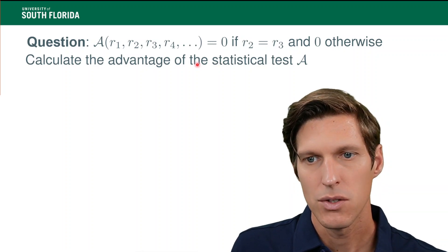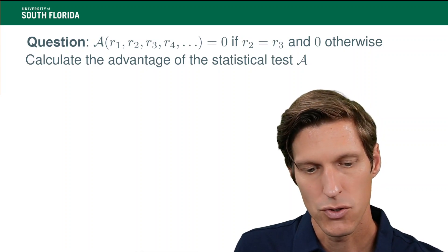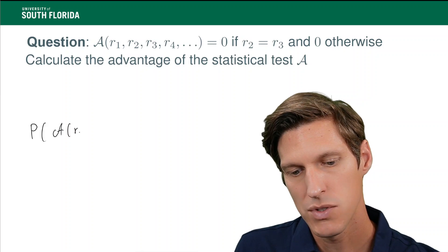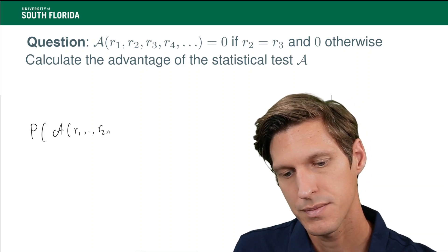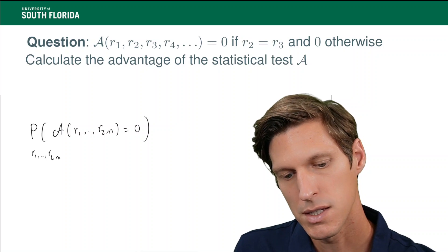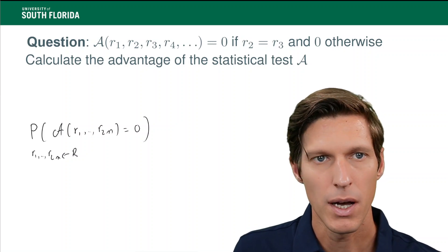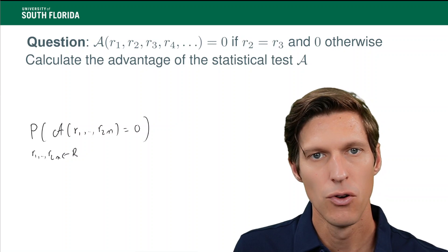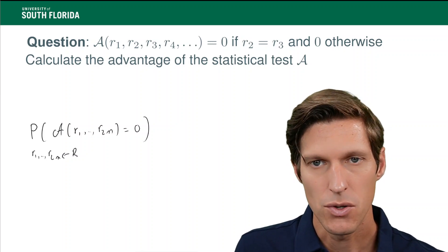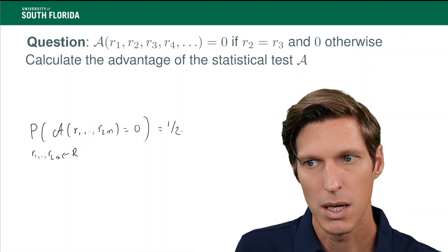Then we calculate the advantage. The question is: calculate the advantage of that statistical test. The advantage is made of two elements. First, it's the probability that the statistical test on input a random sequence r1...r2n returns 0, when r1 to r2n are drawn uniformly at random independently. What we're asking is: what's the probability that r2 and r3 are the same when drawn uniformly at random and independently? The obvious answer is one-half — there's a 50% chance that r2 and r3 are the same.